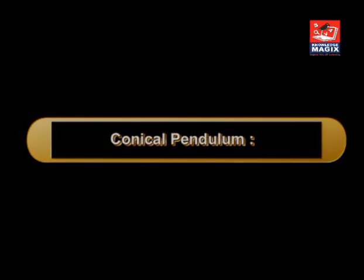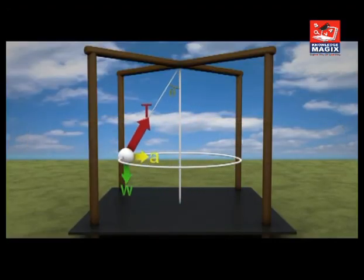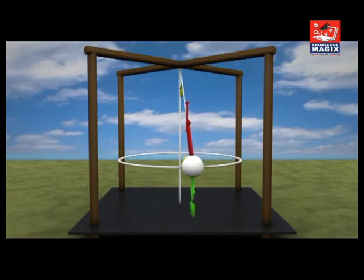Conical pendulum. It is a simple pendulum which is given such a motion that bob describes a horizontal circle and the string describes a cone.